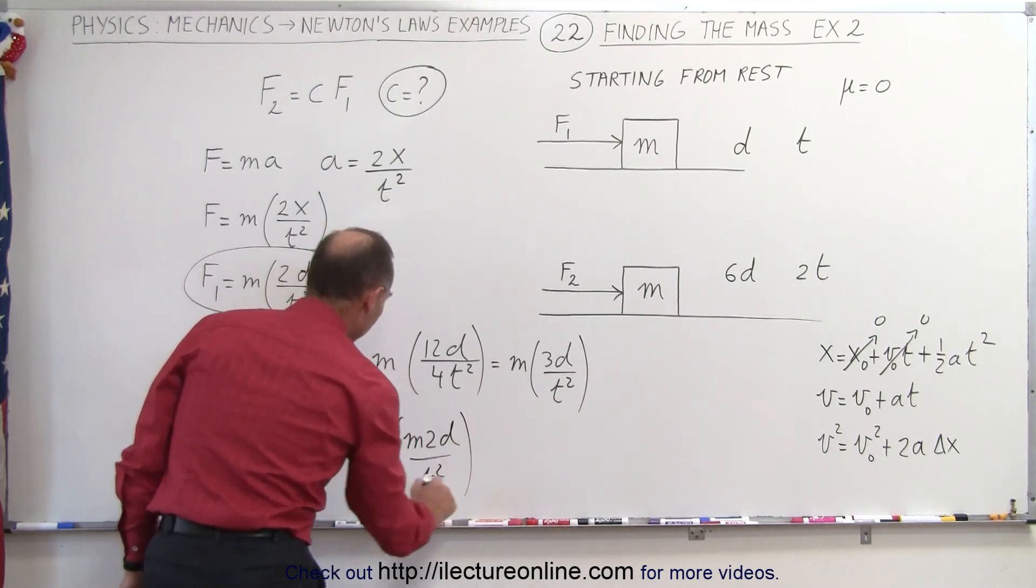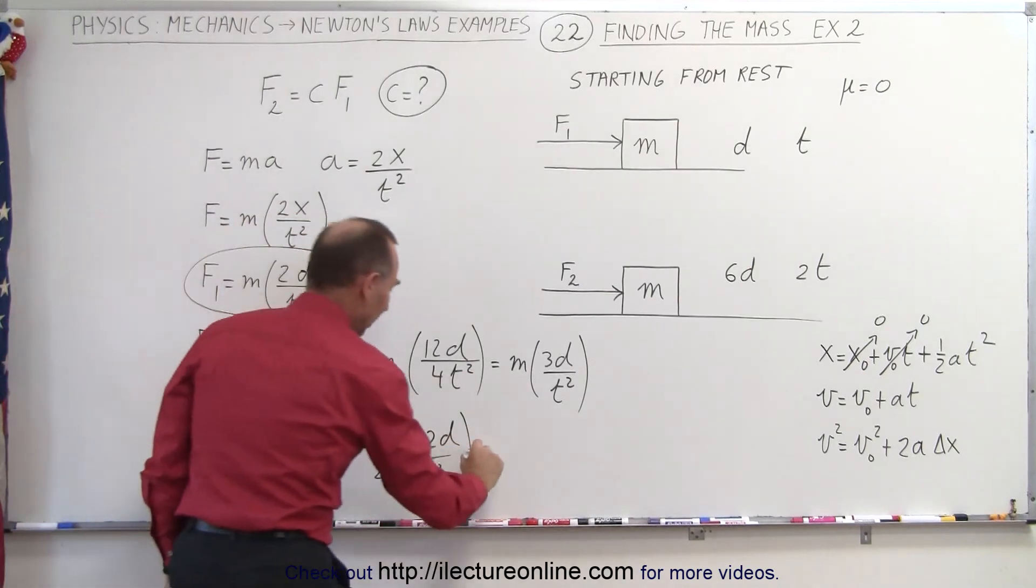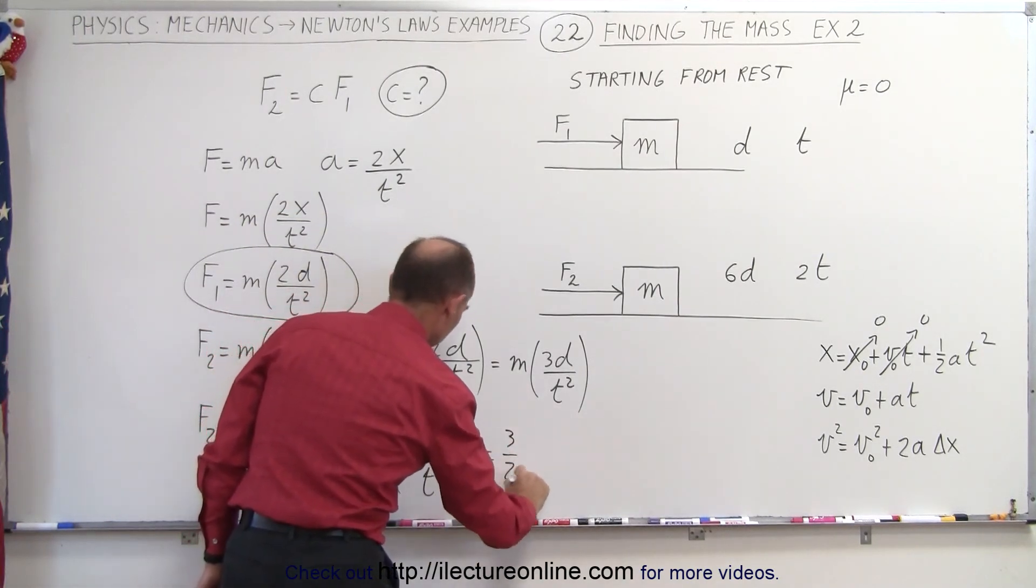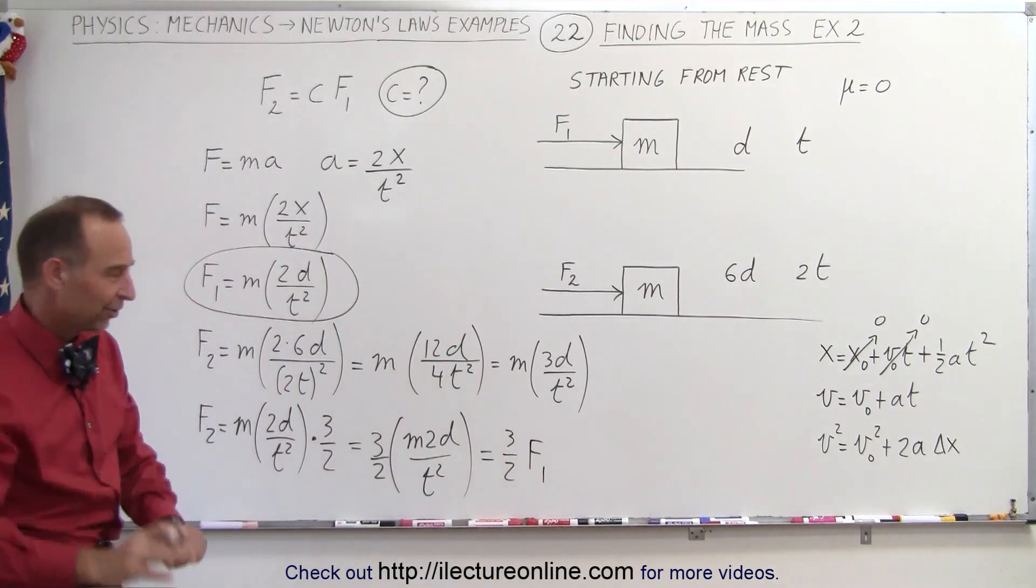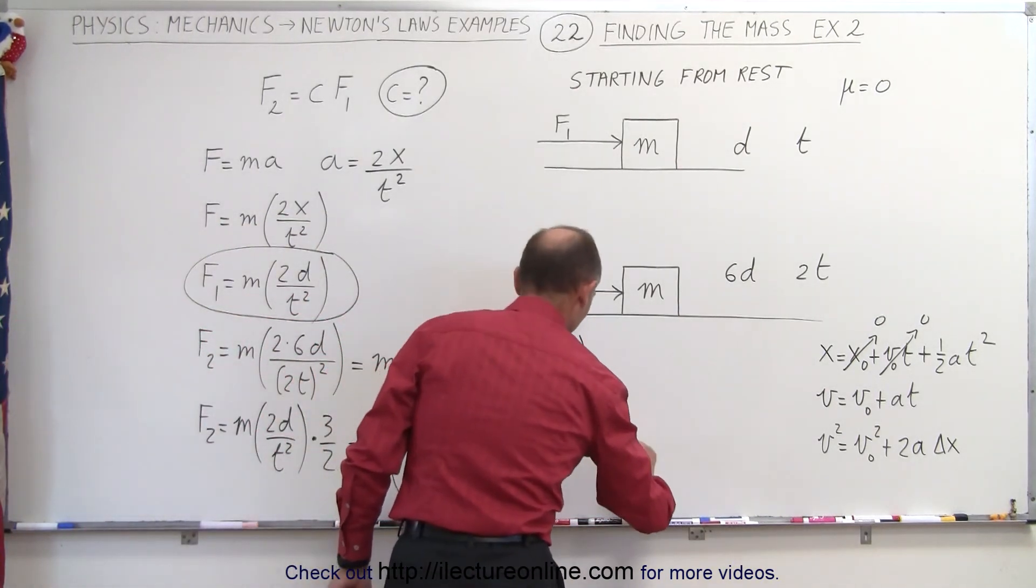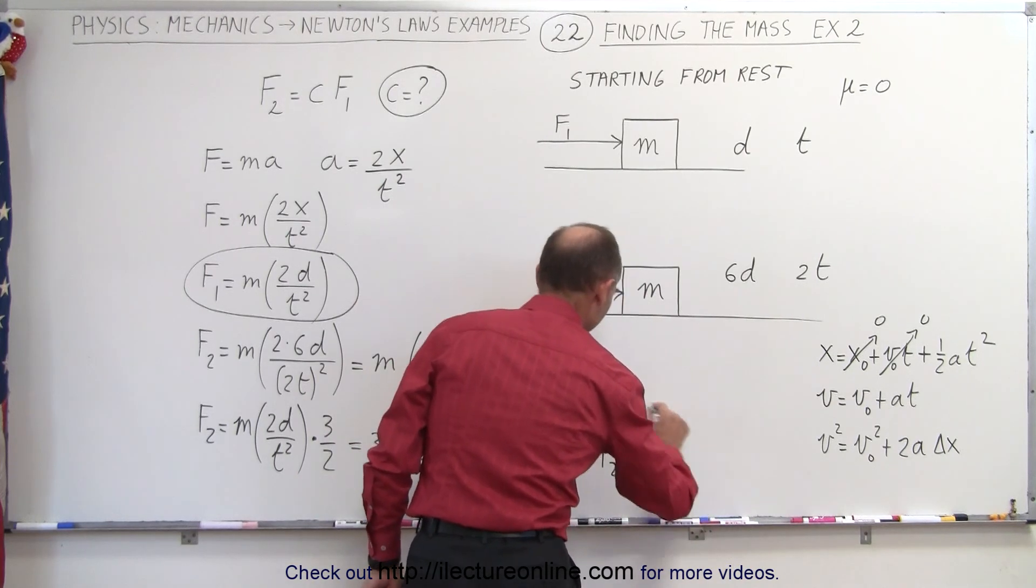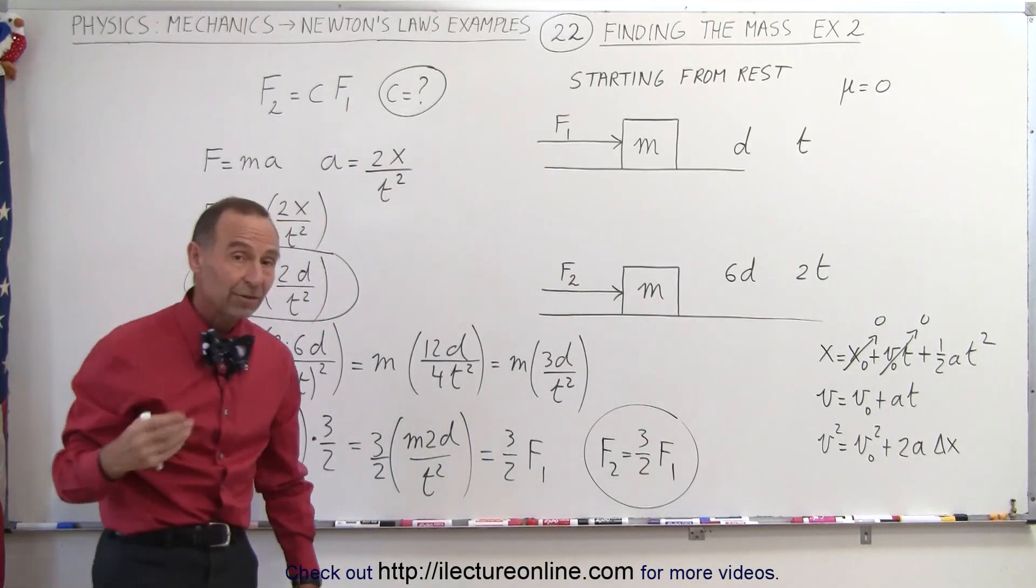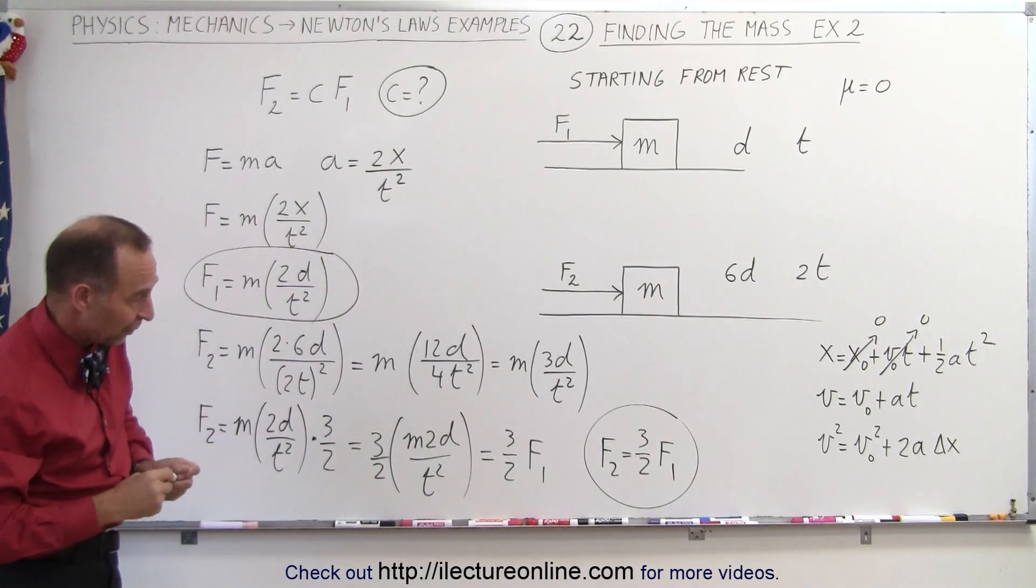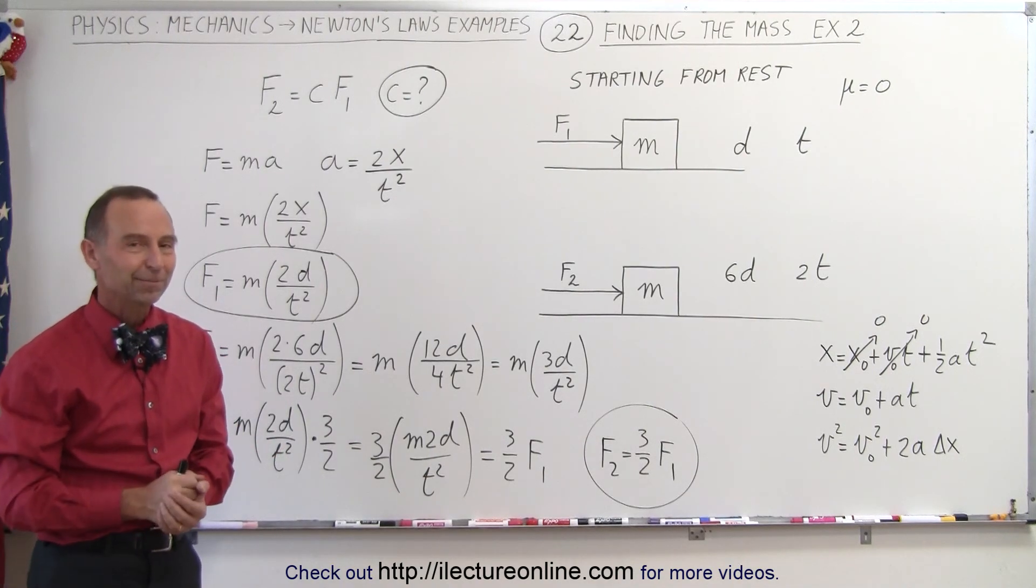And then we come up here and realize, well that was equal to f1, so therefore f2 is equal to 3 over 2 times f1. And again writing it on the side so we can see it, so we say that f2 equals 3 over 2 times f1. And going back over here when we're trying to figure out how much bigger is f2, well it looks like it's 50% bigger or one and a half times f1, and that's how it's done.